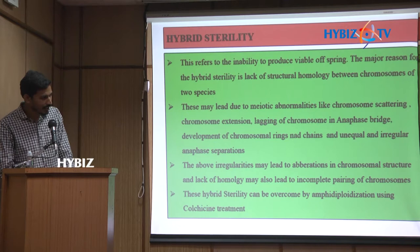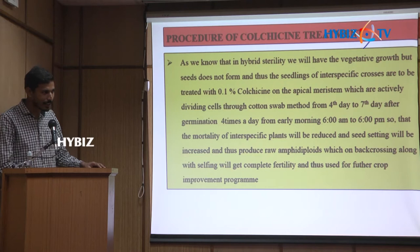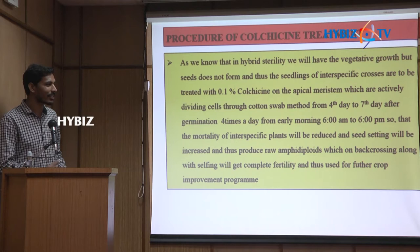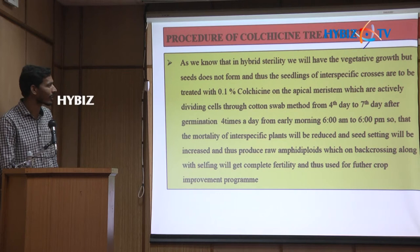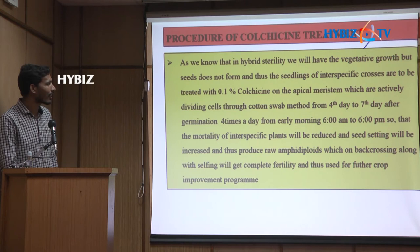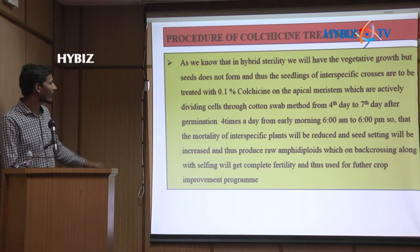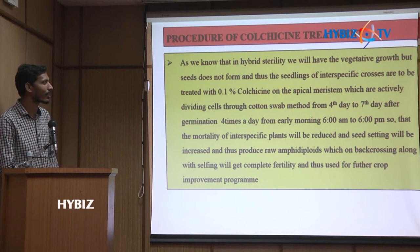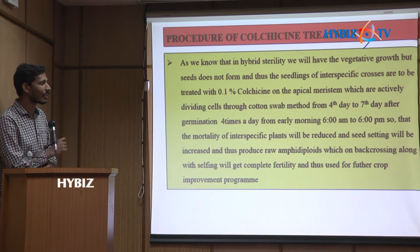The procedure for colchicine treatment: as already mentioned, a cross between two different species produces a sterile hybrid, so we use colchicine treatment for doubling the haploid genome to make it fertile. I have chosen 0.1 percent colchicine treatment, applicable to the meristem — the actively dividing cells — through the quarters method, from the fourth day to the seventh day after germination, four times a day from 6 AM to 6 PM.